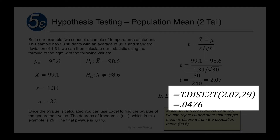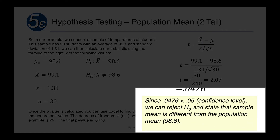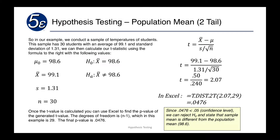Since our p-value is 0.0476, and it's less than our 0.05 significance level, we can reject H0, the null hypothesis, and state that the sample mean is different from the population mean. It's important to know that when we do these tests, we're never accepting the alternative hypothesis. We will only do one of two things: either we reject or we do not reject the null hypothesis. Because the p-value 0.0476 is less than 0.05, we reject the null hypothesis.